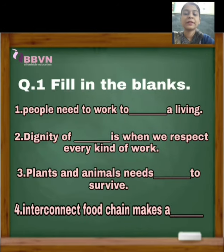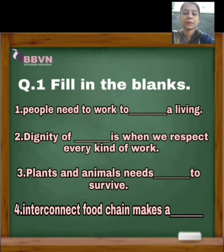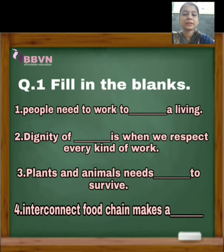Question number 1: Fill in the blanks. People need to work to dash or leaving. Question number 3: Plants and animals need dash to survive. Question number 4: Interconnected food chain makes a dash.